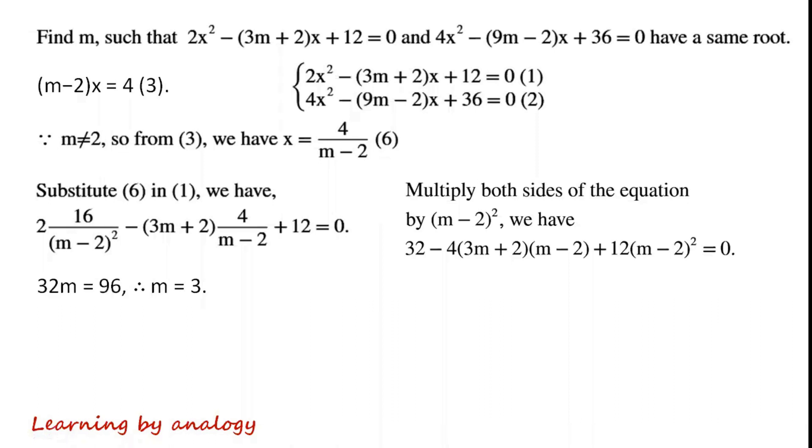By simplifying this equation, we have 32m equals 96, so m equals 3.